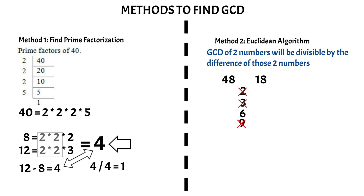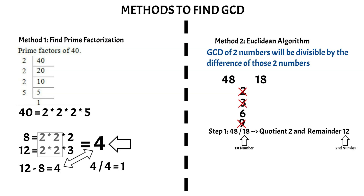When using the Euclidean algorithm, first divide the numbers for which you are trying to find the GCD. Dividing 48 by 18 gives a quotient of 2 and a remainder of 12. In step 2, use the second number of step 1 as the first number, and the remainder from step 1 as the second number. So step 2 uses 18 and 12. Dividing 18 by 12 gives a quotient of 1 and a remainder of 6.